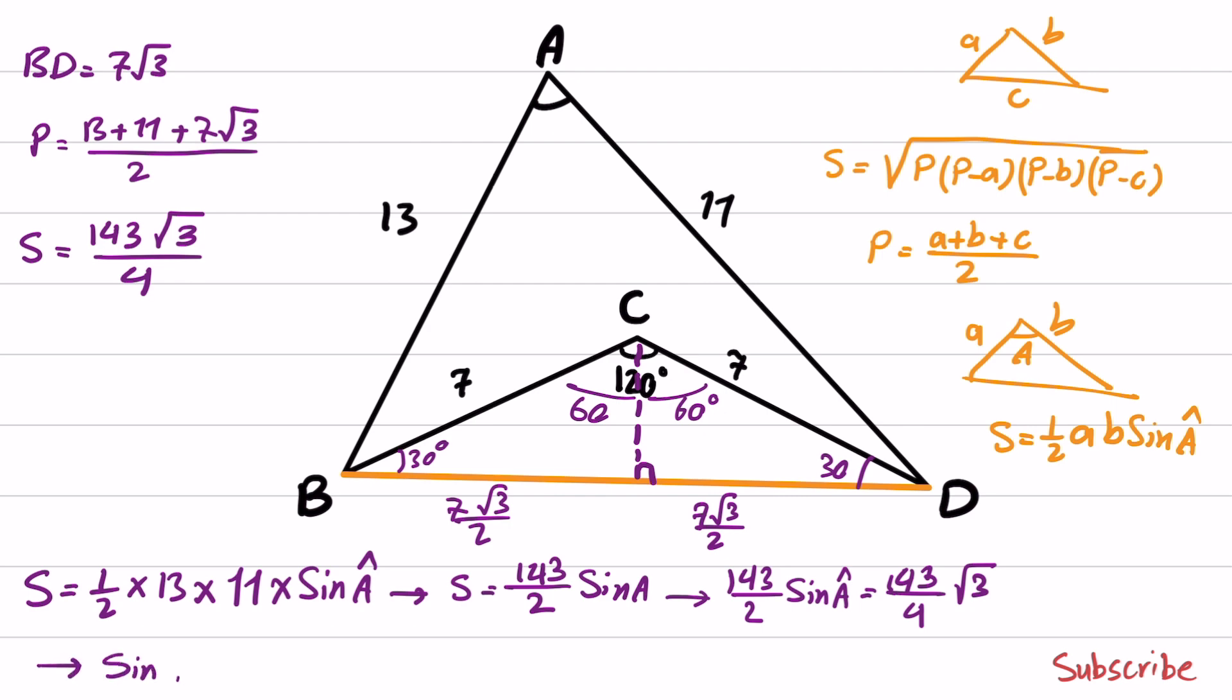we obtain sine angle A is equal to the square root of 3 over 2. And from this,